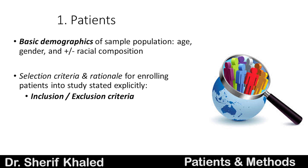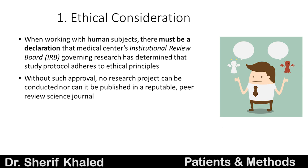Let's look at these in detail. For patients, describe demographics such as age, gender, and possibly racial composition. Second, describe the inclusion and exclusion criteria — the selection criteria and rationale for enrolling that sample into the study. Third, ethical consideration is very important in the patient section. When working with humans, there must be a declaration that the medical center's institutional review board reviewed your research and determined that the study protocol adheres to ethical principles. Without ethical approval, you cannot publish anywhere — no research project can be conducted or published.